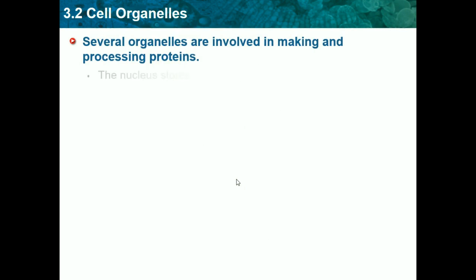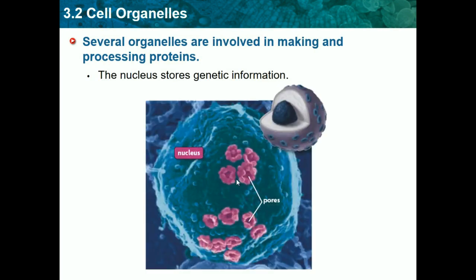Several organelles are involved in making and processing proteins. The nucleus stores genetic information — it's the center of the cell and is sometimes called the brain of the cell.